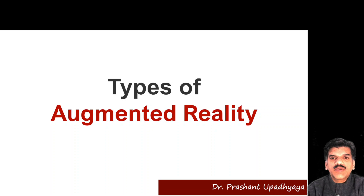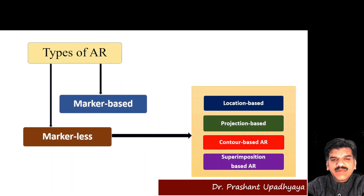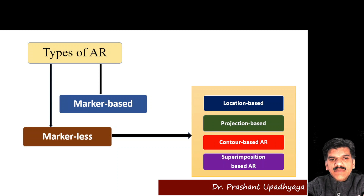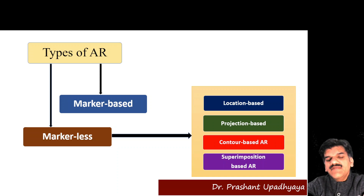Welcome back again. I'm Dr. Prashant Pataya, and today we will talk about the types of augmented reality. When we talk about the types of AR, we generally divide it into two types: marker-based and markerless. The markerless can be further divided into subcategories: location-based, projection-based, contour-based, and superimposition-based AR. We will talk about marker-based AR first and then the markerless techniques.